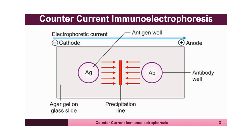The antigens and the antibodies are made to move in the presence of an electric field using an electrophoretic apparatus. Therefore it is called counter current immunoelectrophoresis — counter current because the antigen and the antibody move towards each other in the presence of the electric field and meet at a particular point to give a precipitin band.